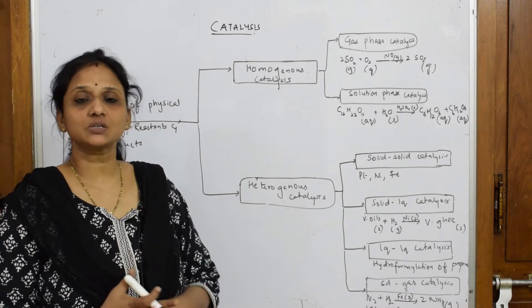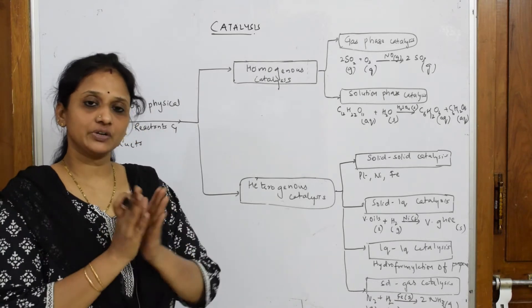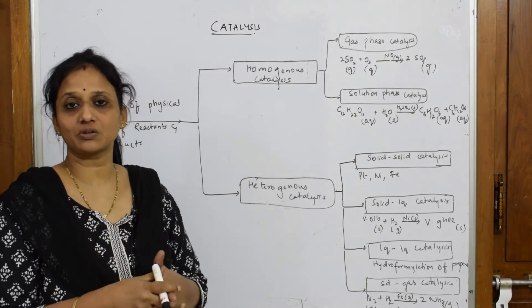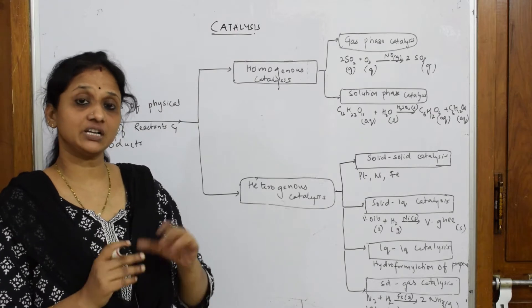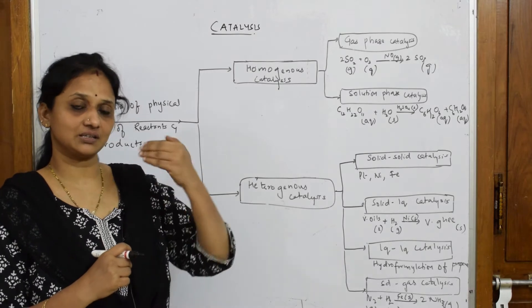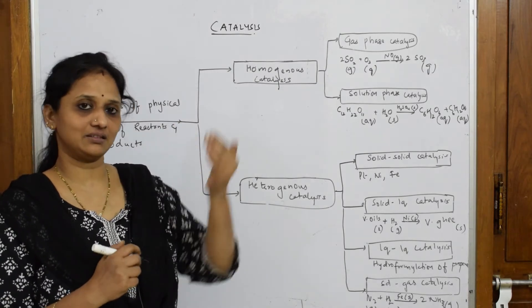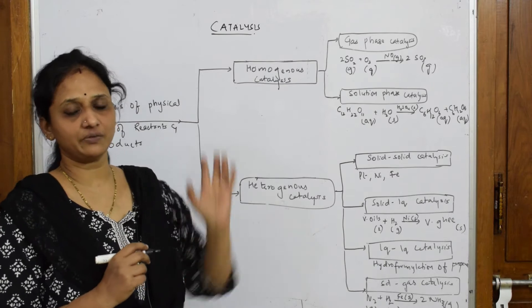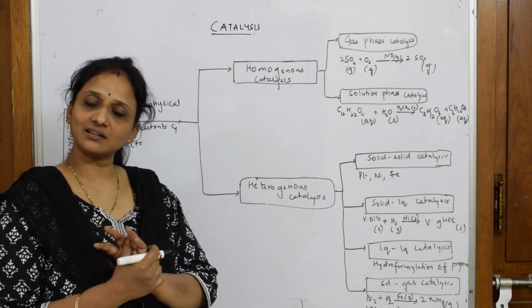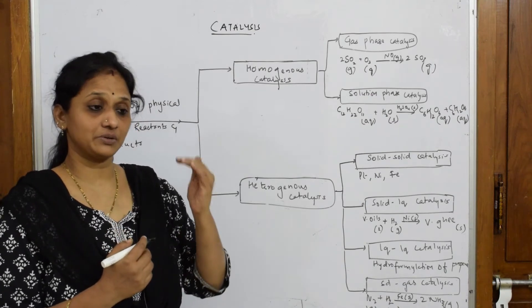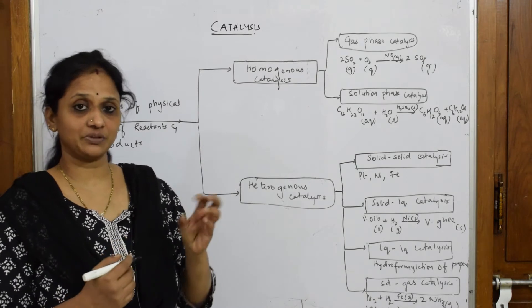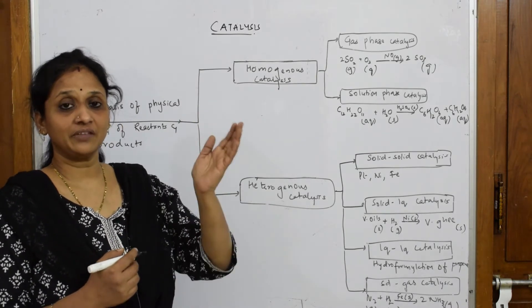Let's learn the concept of catalysis. When we studied this in grade 10, we were introduced to the catalyst — a substance that increases the rate of reaction. With a catalyst, the reaction crosses the energy barrier more easily to give products. Without a catalyst, it takes much longer because it has to cross the full activation energy barrier.